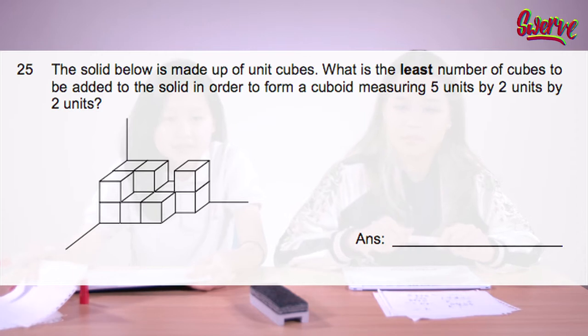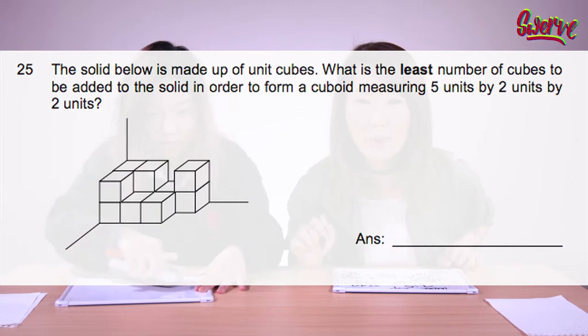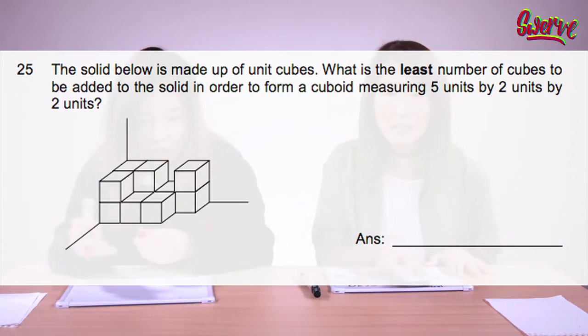The solid below is made out of unit cubes. What is the least number of cubes to be added to the solid in order to form a cuboid measuring 5 units by 2 units by 2 units? Okay, first things first — what is a cuboid?